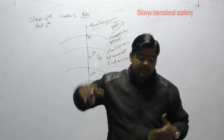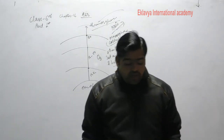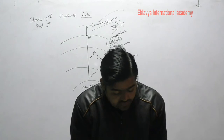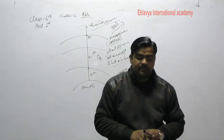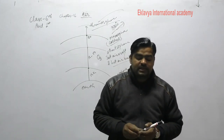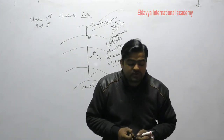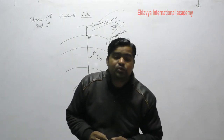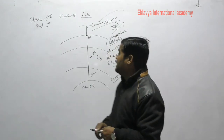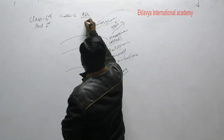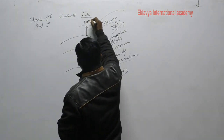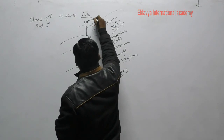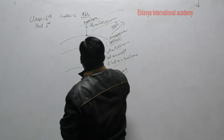The exosphere is the uppermost layer of the atmosphere, and it is the layer where the atmosphere merges into space. These are the five layers of the atmosphere.